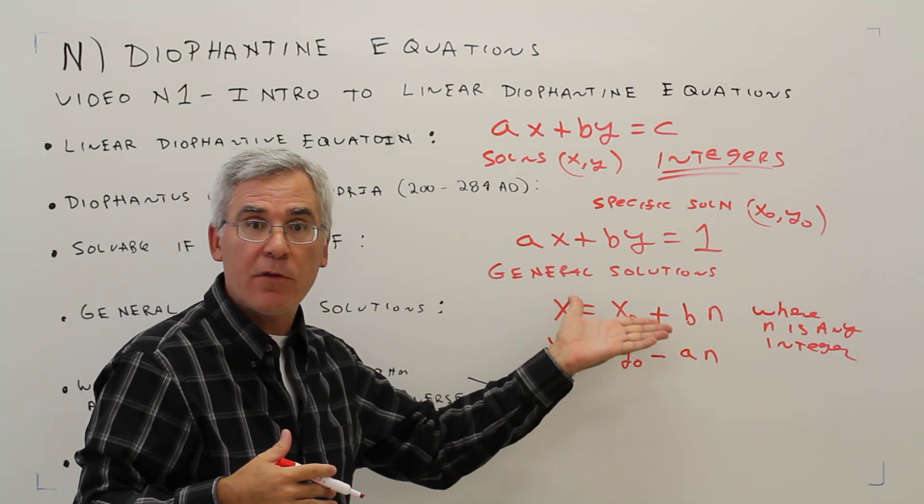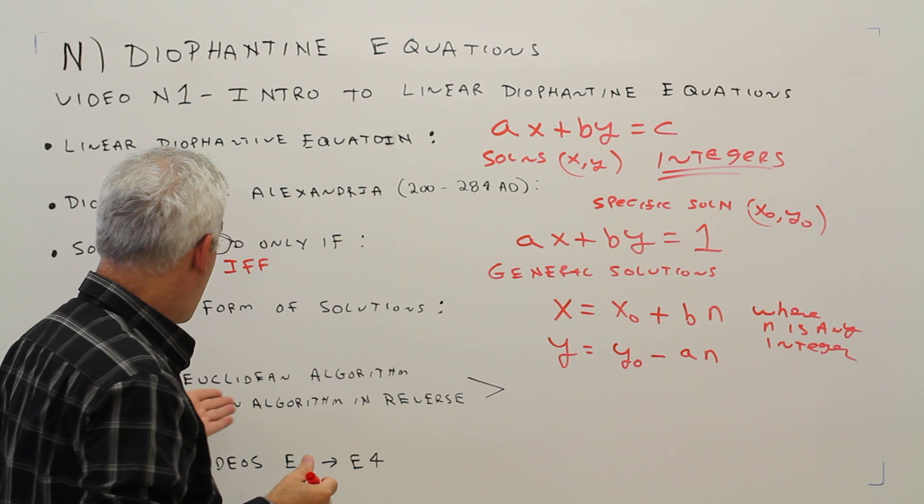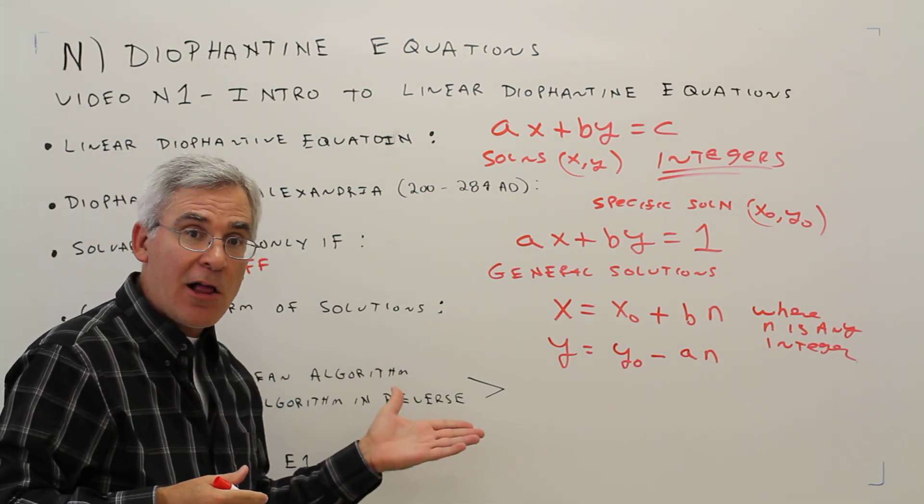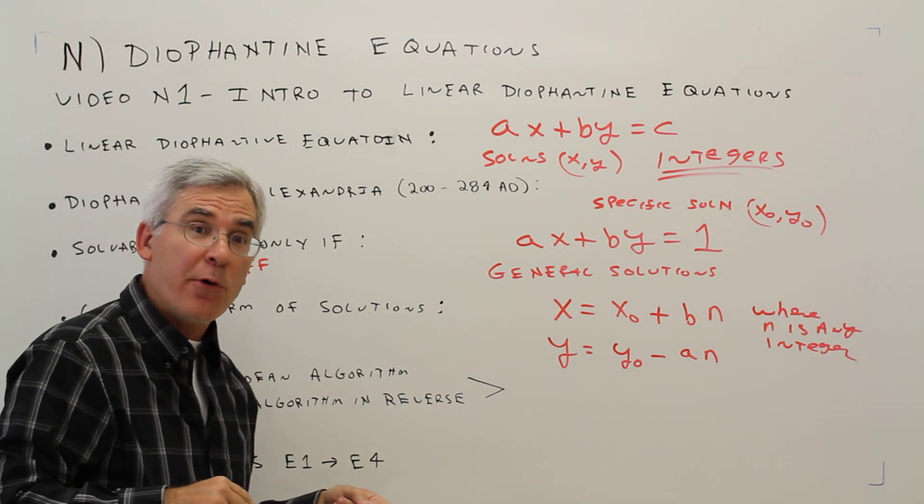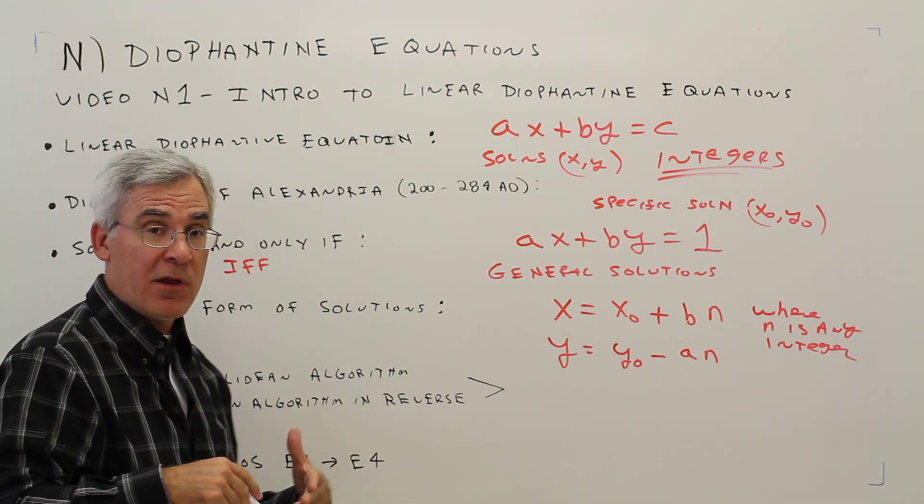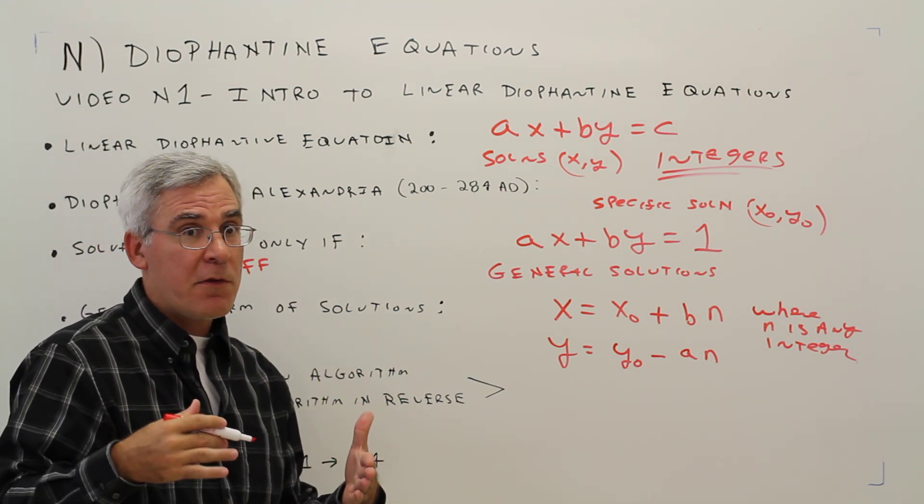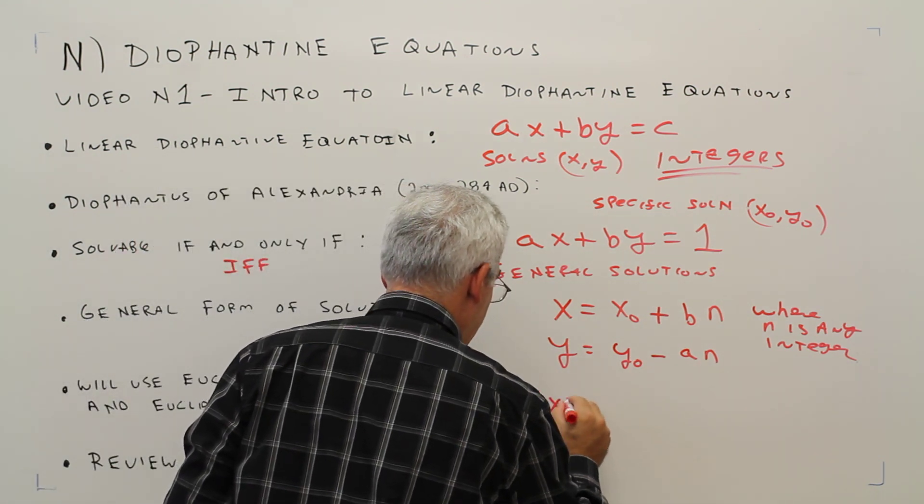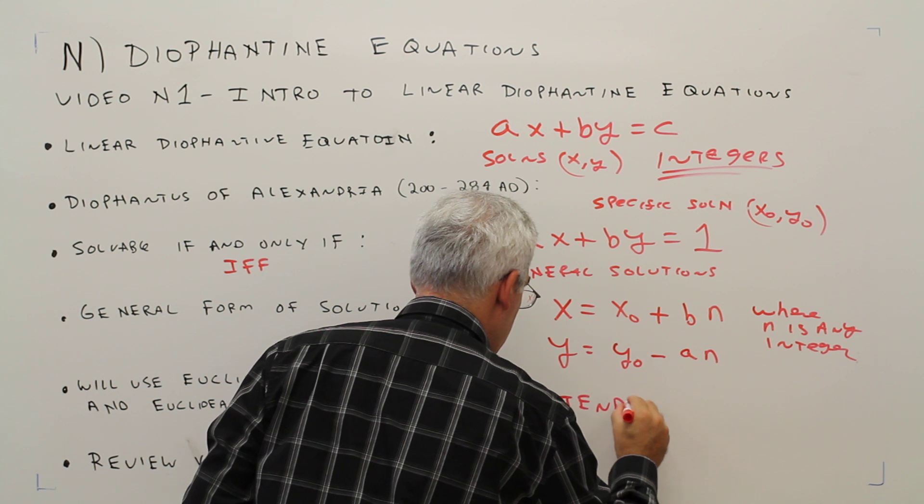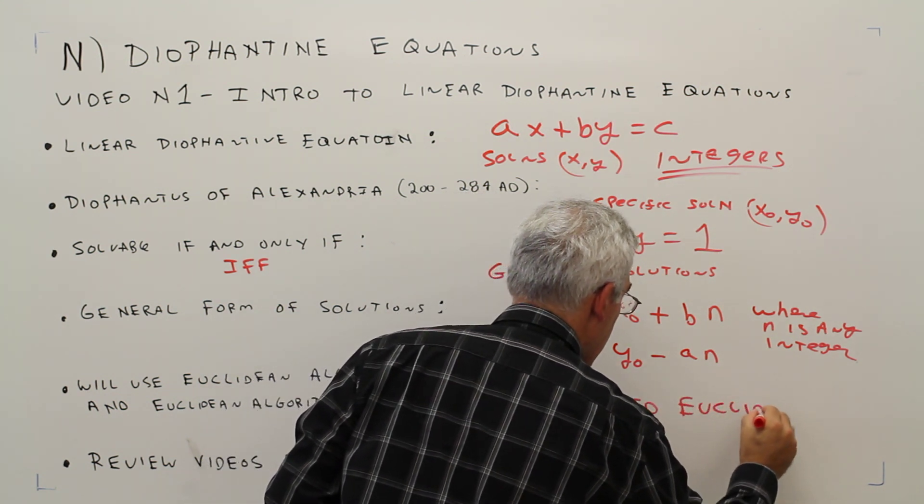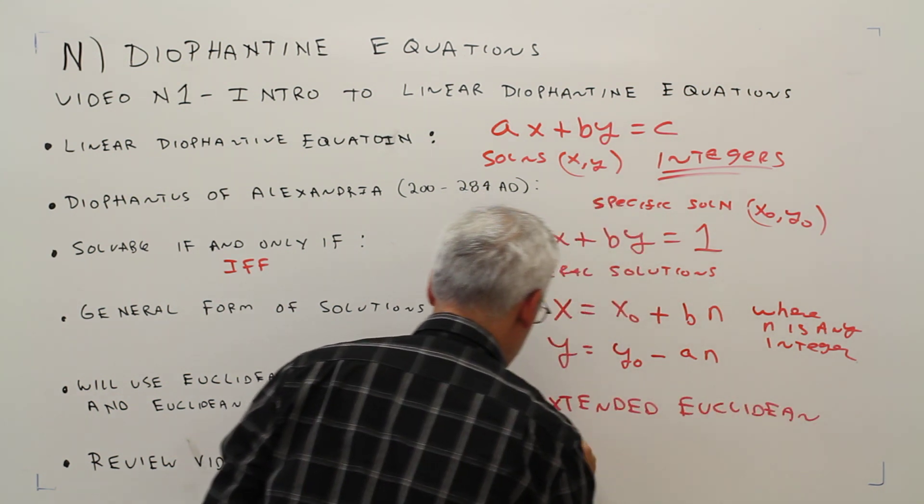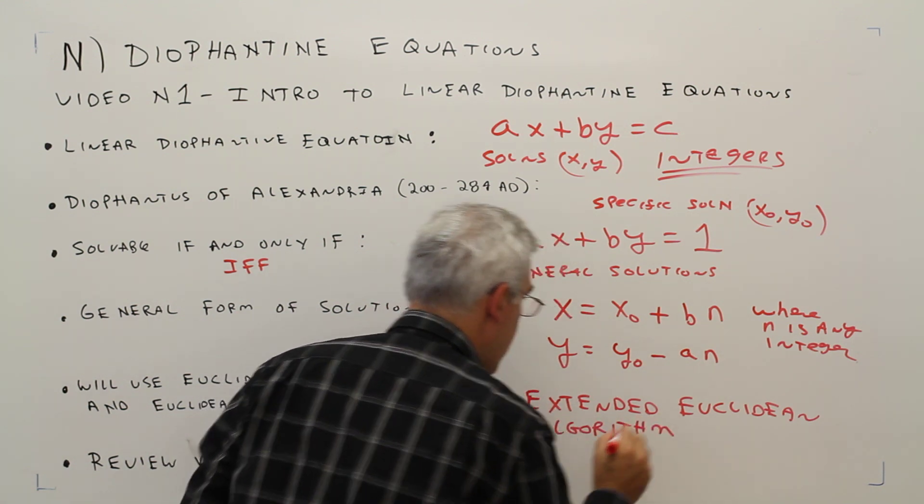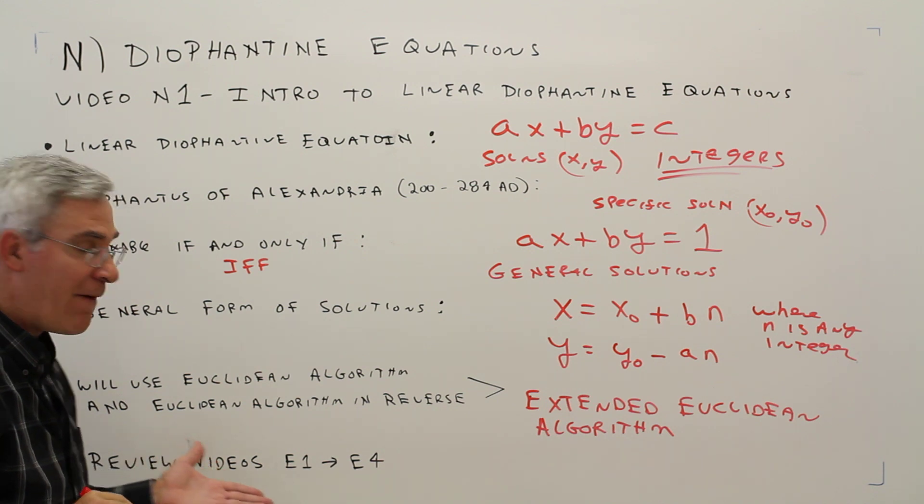So this is very important to understand this. When we're solving these problems, we'll be using the Euclidean algorithm. And also, the Euclidean algorithm in reverse. So, this is often called the extended Euclidean algorithm.